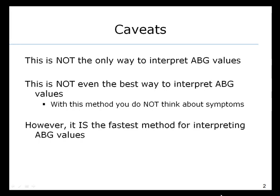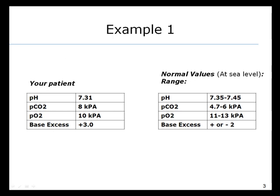Let's look at example one. Here's a patient who has a pH of 7.31, a PCO2 in their arterial blood of 8 kilopascals, a PO2 of 10 kilopascals, and a base excess of plus 3.0.